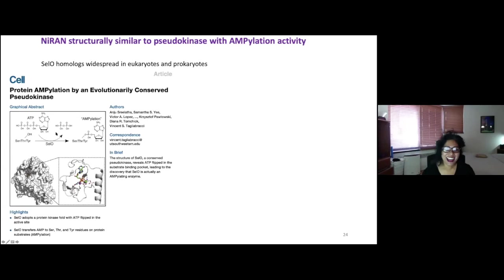And this family actually does something different. It transfers an AMP. It's called AMPylation, but I guess you can call it nucleotidylation more specifically. So it transfers a serine, threonine or tyrosine hydroxyl. It'll transfer just the base and one phosphate.